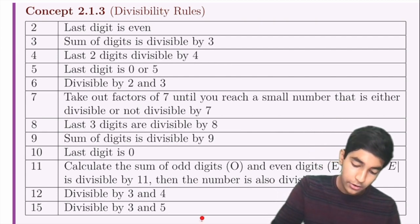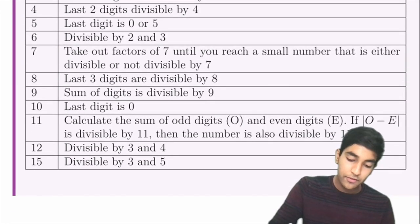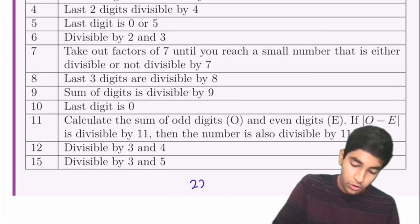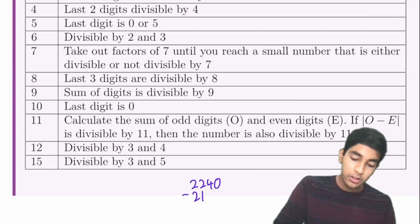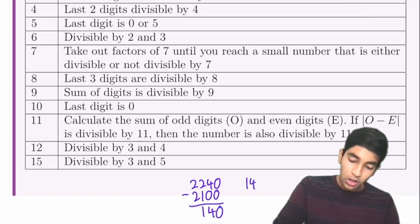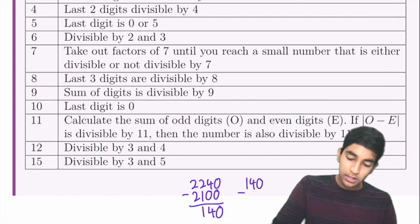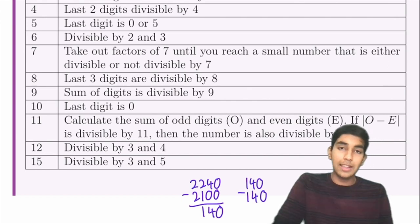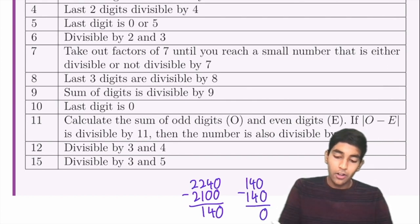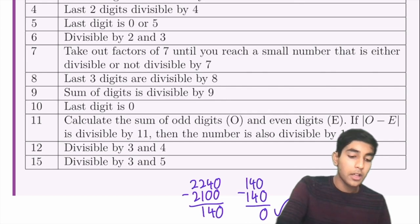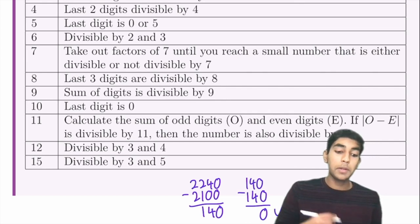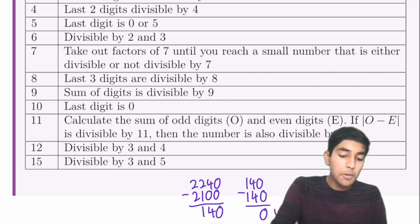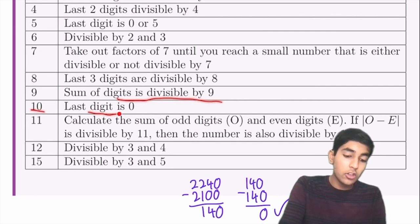For example, 2240: 2100 is 7 × 300, leaving 140, which is 7 × 20, leaving 0 — so it's a multiple of 7. For 8, the last three digits must be divisible by 8. For 9, the sum of digits is divisible by 9. For 10, the last digit is 0.